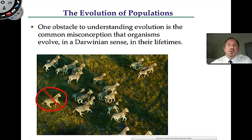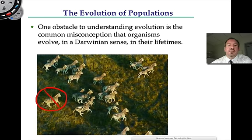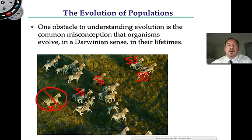In fact, the unit of evolutionary change from one generation to the next is a population. We can consider a population as a pool of genes. For whatever trait you consider — like stripes, speed, or hearing — if an organism is eliminated, some of its alleles are eliminated. If the surviving individuals reproduce, the dominant allele will change in frequency in the gene pool over time.